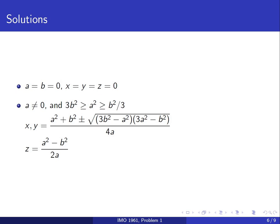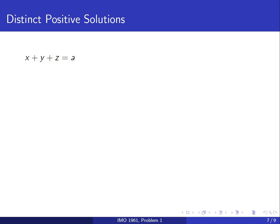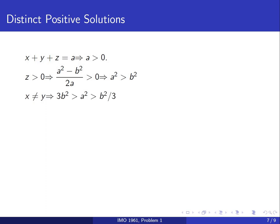Now we determine under what conditions the solutions are distinct and positive. From the first equation, x plus y plus z must be positive, so a must be positive. For z to be positive, a squared must be greater than b squared since the denominator 2a is already positive. For x and y to be real and distinct, the discriminant must be strictly positive, so we drop the equalities: 3b squared greater than a squared greater than b squared over 3. Combined with a squared greater than b squared, we get 3b squared greater than a squared greater than b squared.